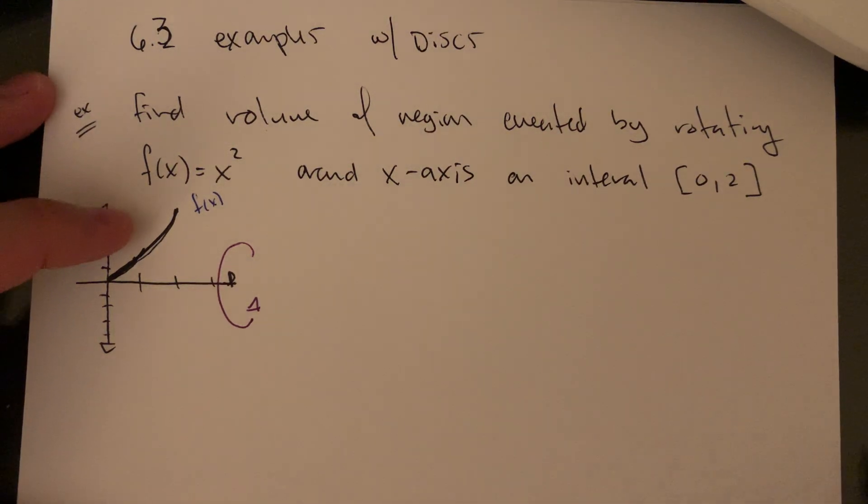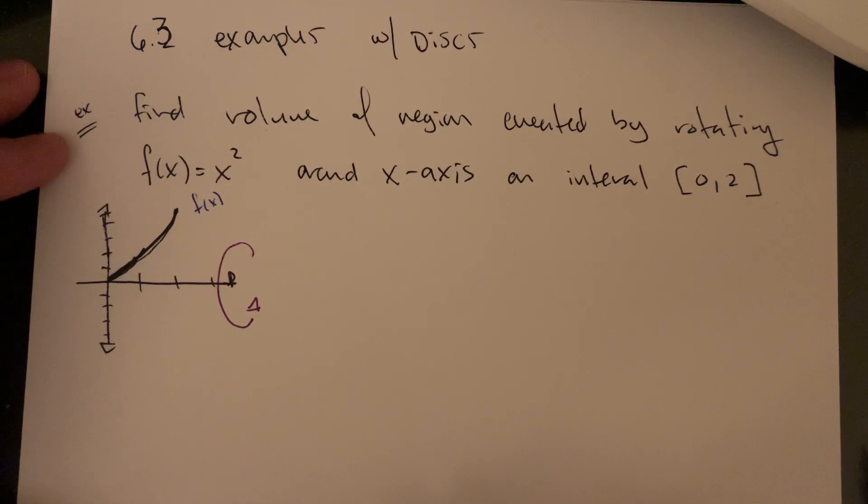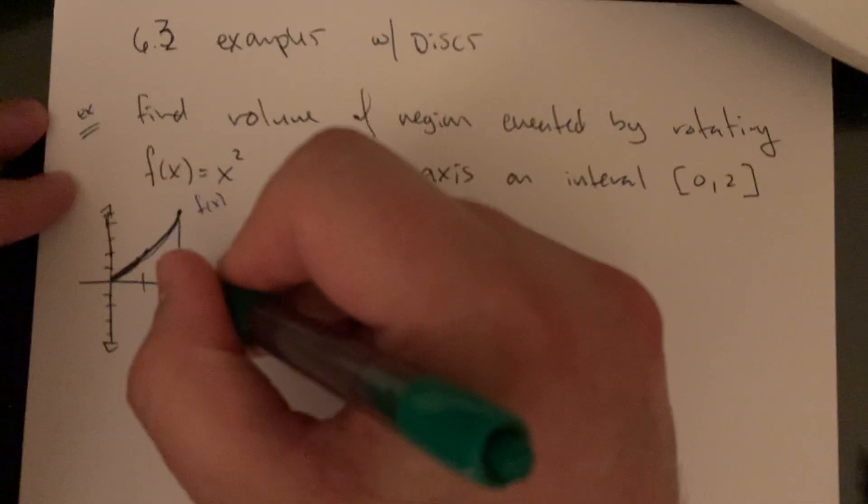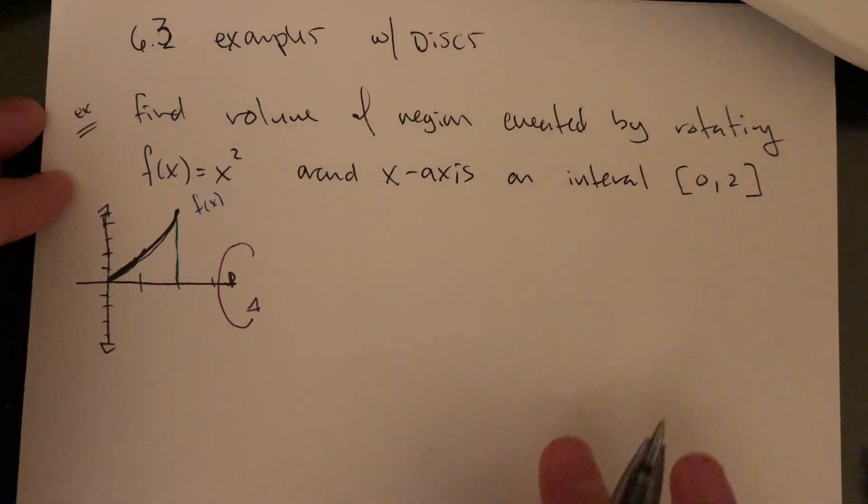Here is a particularly poorly drawn x squared, looks more like a straight line than a parabola. Sorry about that. I guess I could have redrawn it and started again, but it's kind of late. I'm kind of tired, so we're just going to go with it.